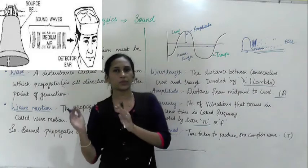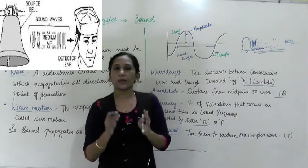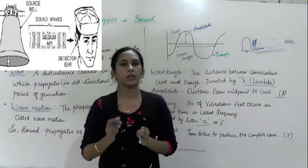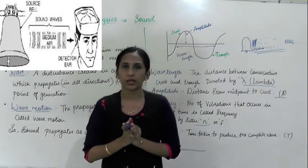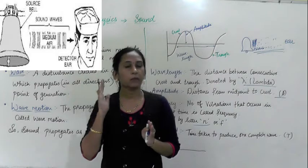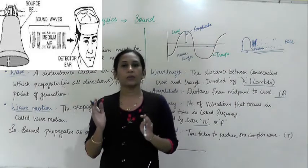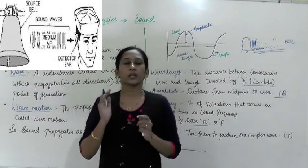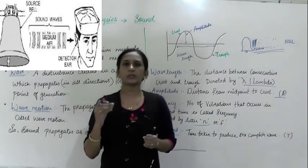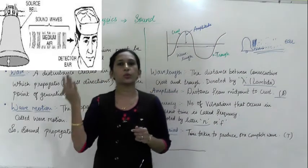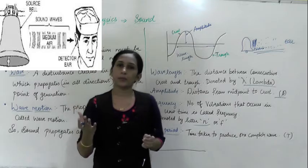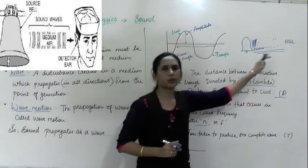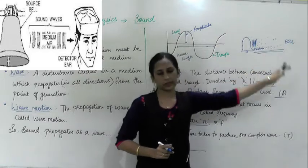The vibration passes until it reaches our ear's diaphragm. When it reaches our ear's diaphragm, the diaphragm also vibrates. When our ear's diaphragm vibrates, this signal is sent to the brain, and then the brain recognizes the sound. This is how the propagation of sound takes place.